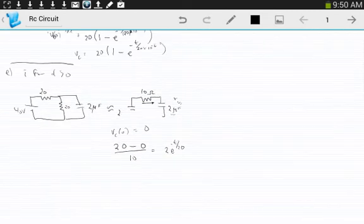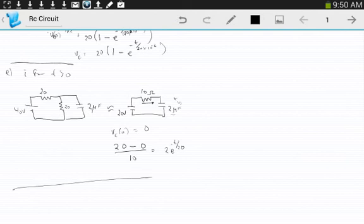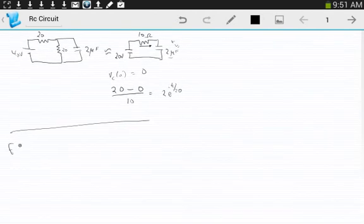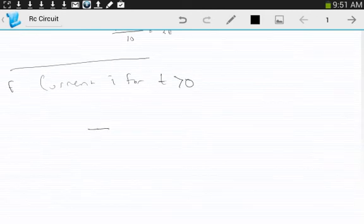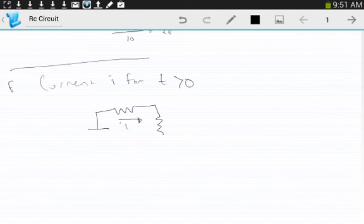Okay. And the final, I for T greater than zero. I for T greater than zero. So, I was this.